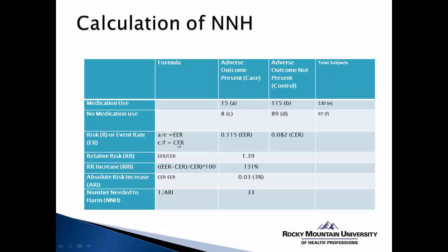Our first calculation is the experimental event rate, which is the number of people that had the adverse outcome divided by the total number of people who took the medication. Here, the EER is 0.115. The control event rate is the number of people in the control group who had the adverse outcome divided by the total in that group, giving a CER of 0.082. The event rate for the experimental group is higher than for the control group.